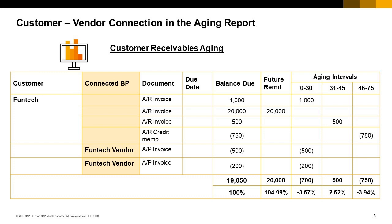You can display connected vendor data in the Customer Receivables Aging and connected customer data in the Vendor Liabilities Aging. To do so, check the 'Consider Connected Vendors/Customers' box on the Selection Criteria initial window. A connected customer or vendor is used when a business partner is both a customer and a vendor — there is one Business Partner Master Data for the customer and one for the vendor. Once the two business partners are connected, you can clear open debts of the customer with the open debts for the vendor. In the image you can see both AR invoices for Funtac the customer and AP invoices for Funtac the vendor, and the total balance due takes into consideration the AP invoices amount.